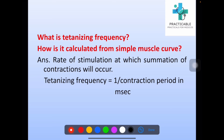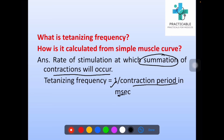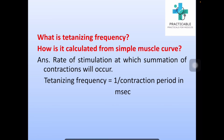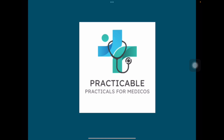What is tetanizing frequency and how is it calculated from the simple muscle curve? Tetanizing frequency is the rate of stimulation at which summation of contractions will occur. It can be calculated from the simple muscle curve by the following formula: 1 divided by contraction period in milliseconds. Thank you so much.